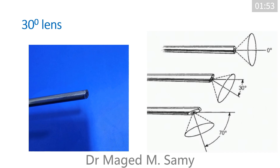The lens used is a 30-degree lens, so it is not looking straight ahead like a zero-degree lens used in laparoscopy — it's looking 30 degrees downward. Your field of view is actually below where the lens is pointing. Therefore, if you want to change the field by rotating the lens and light cable: if you want to look up, you rotate the lens and light cable down, and vice versa.